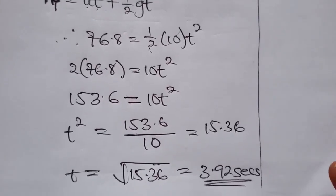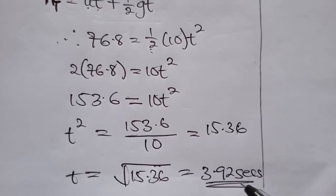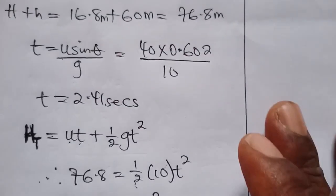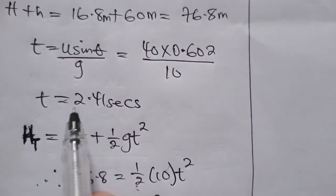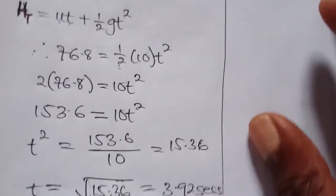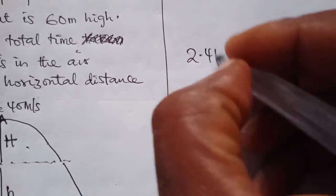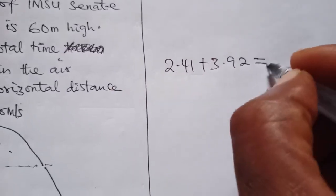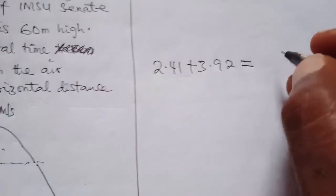So what this time means is that the total time this ball spent in the air is this time plus the initial time that we calculated. Therefore, the total time is 3.92 seconds plus 2.41 seconds, and if we add that together, we get 6.33 seconds.